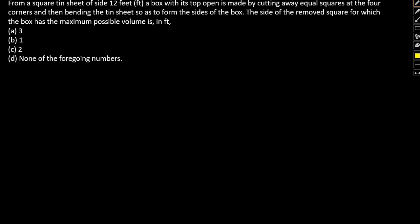From a square tin sheet of side 12 feet, a box with its top open is made by cutting away equal squares at the four corners and then bending the tin sheet so as to form the sides of the box.